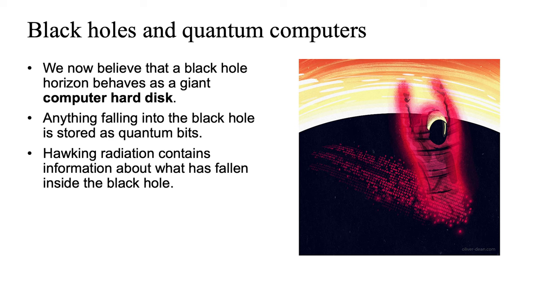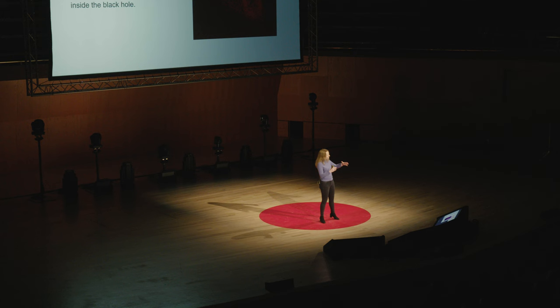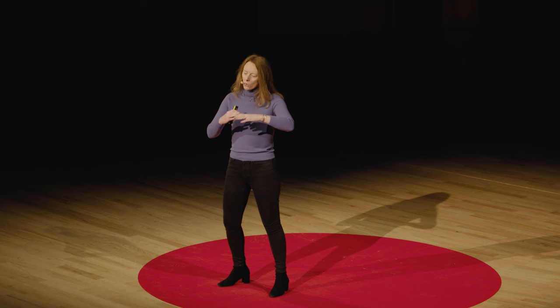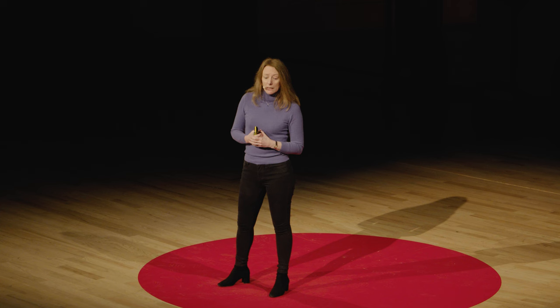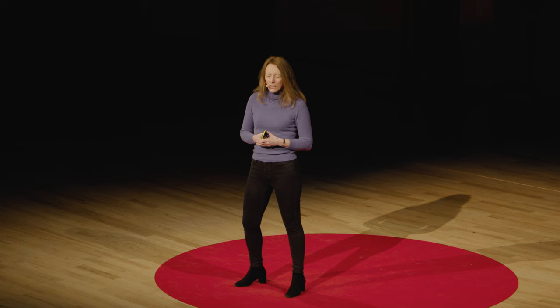What we understand is happening in black holes now is that black holes are acting as giant quantum computer hard disks. As something goes into a black hole, it gets stored as information on the black hole's surface. This image, drawn by a very talented graphic artist, Oliver Dean, tries to illustrate this — you're an astronaut falling into the surface of the black hole. The information is imprinted on the surface, and what goes in eventually comes out in this infamous Hawking radiation, which contains information about what fell in and how the black hole was formed.